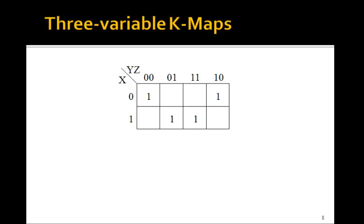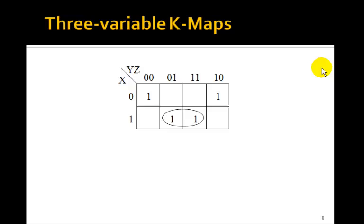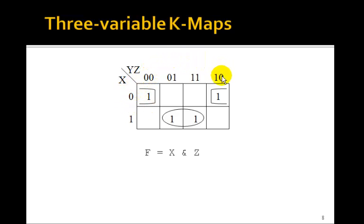How about this one? There's one circle for sure. What about these two? This edge is really connected to this edge — you can think of this as wrapped around. In going from this column to this column, only y changes; z stays at 0. So these are really connected, and we draw a circle around these two. This term reduces to just x and z — the y goes away. And the other gives not x and not z, because y goes away there too.